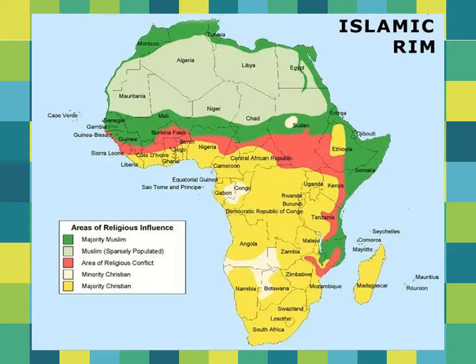The South African continent has a majority of the population following Christianity, with some patches here and there. The white patches show minority Christian-populated regions; you can still find some pink and green portions in South Africa. Keeping this religious map in mind makes it easier to understand how Islam spread from Egypt across North Africa, the Sahara, and the Sahel region.